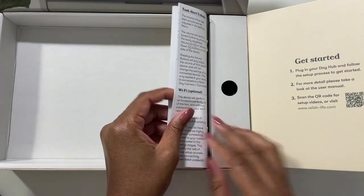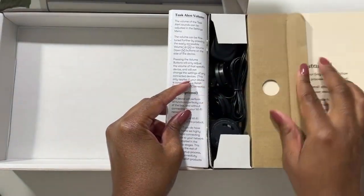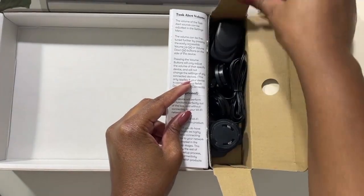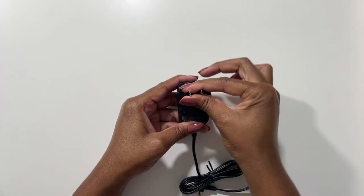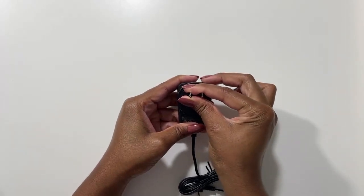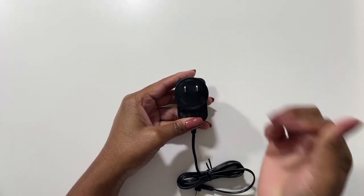Then on the right we have the English user manual and a compartment with the power adapter and plugs. You'll want to choose the plug that matches your outlet, then we'll connect the plug to the power adapter by lining it up, pushing down, and twisting to the right.